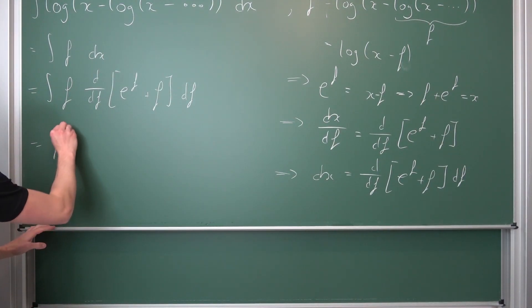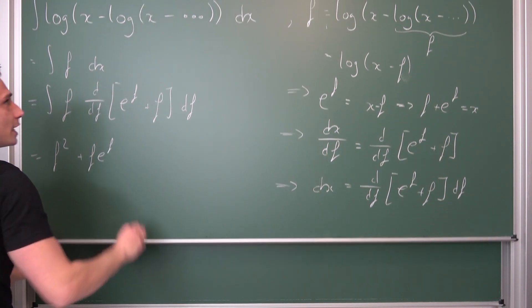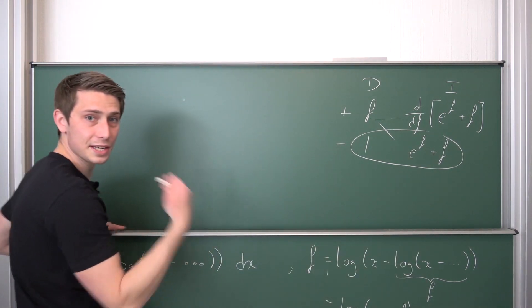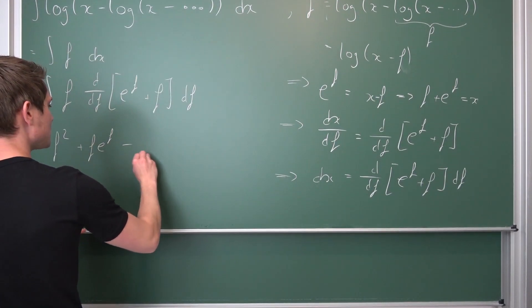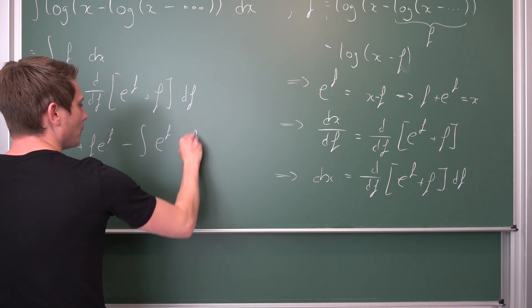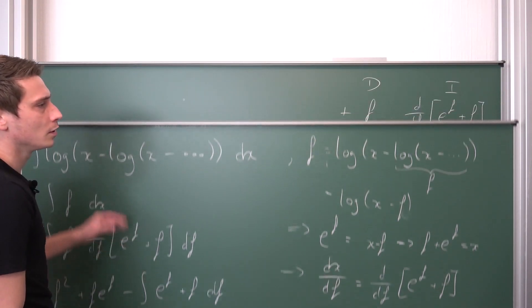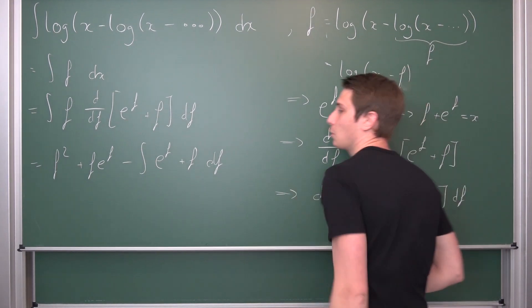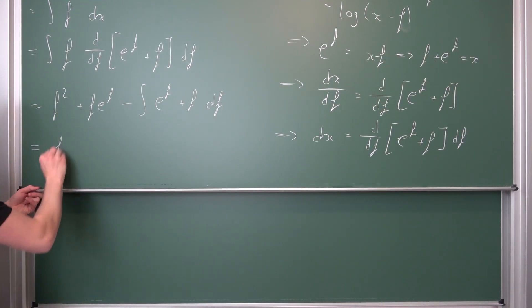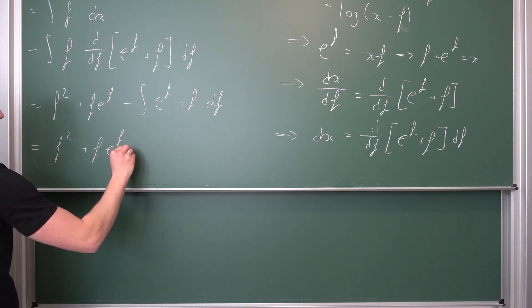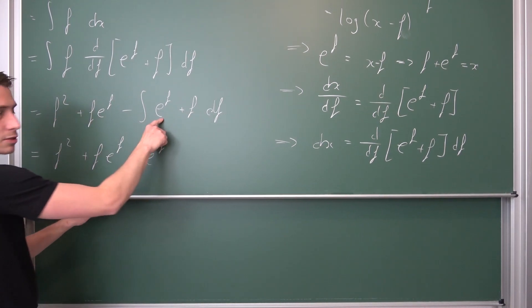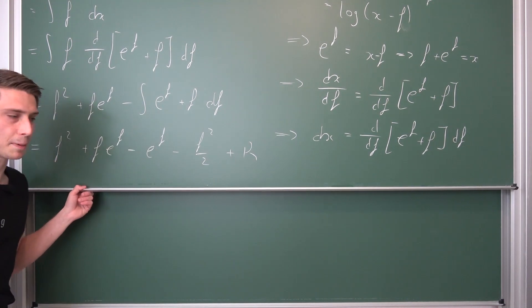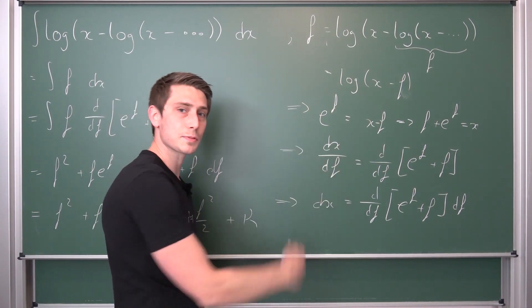Integration by parts gives us the product: f(e^f + f) minus the integral of e^f + f with respect to f. You guys probably know how to integrate this. We get f² + fe^f minus e^f minus f²/2 plus some arbitrary constant kappa.